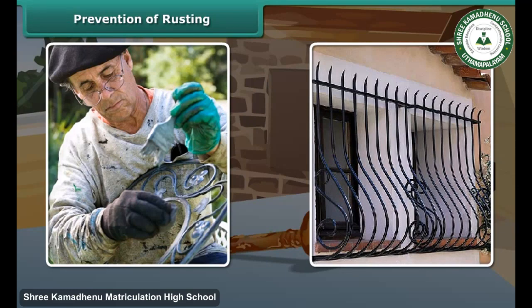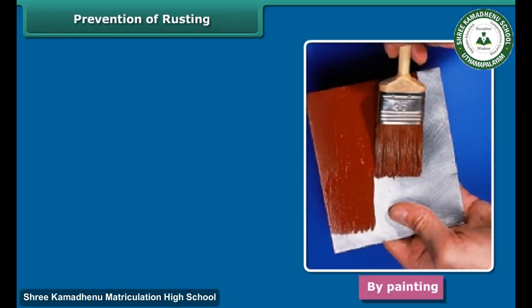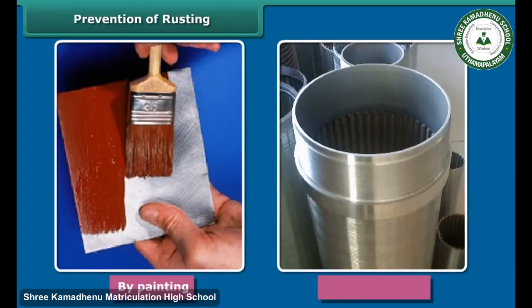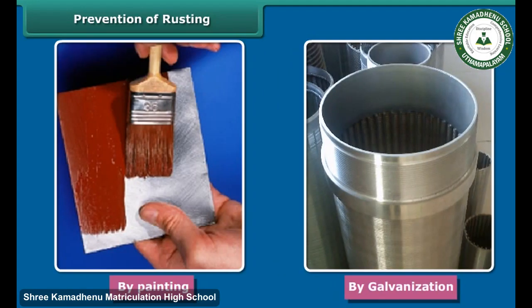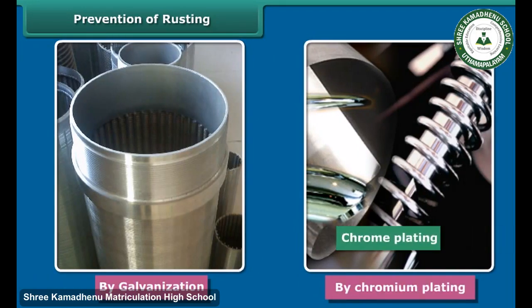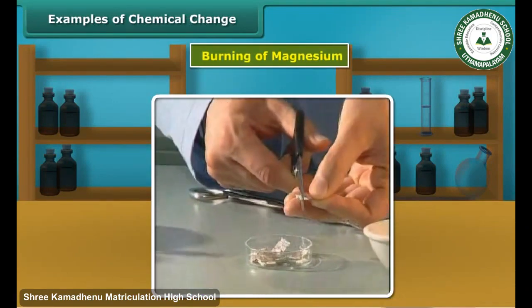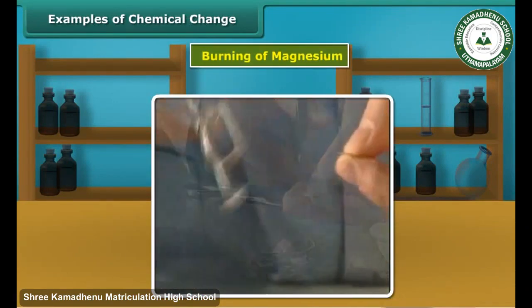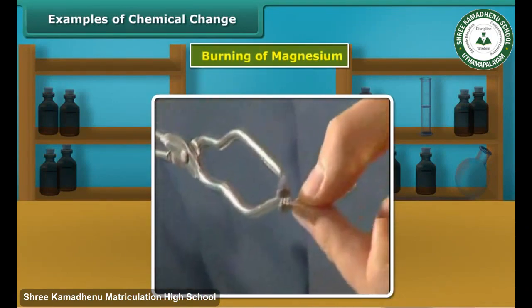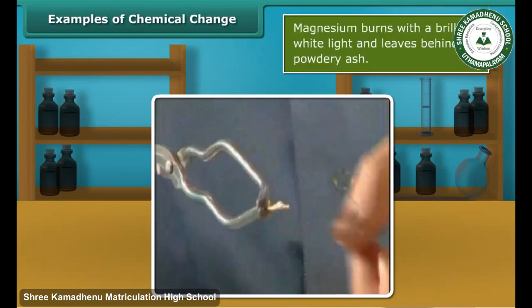We can prevent rusting by preventing iron articles from contacting moist oxygen or water. This is accomplished by painting, applying grease or oil, depositing a layer of zinc on iron (which is also called galvanization), and by chromium plating.